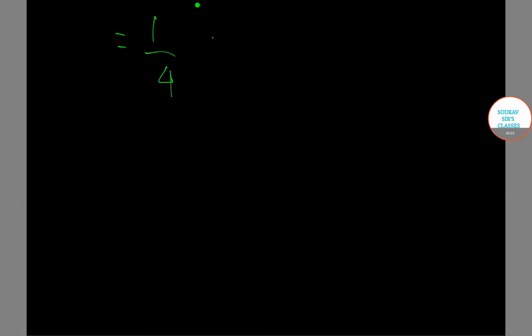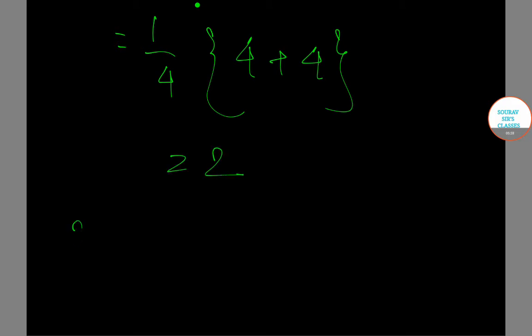This results in (1/4) multiplied by (4 + 4), which equals 2. So our final answer is 2. Thank you for watching the video — hope this helped you solve your queries. For more videos, keep checking our channel and stay tuned for more solutions of IIT JAM Statistics papers. Thank you.